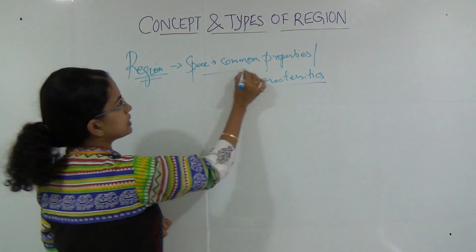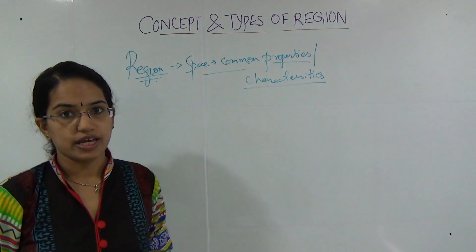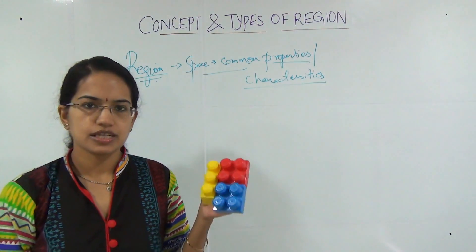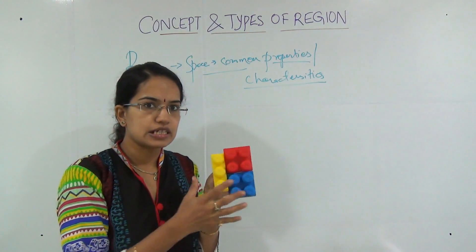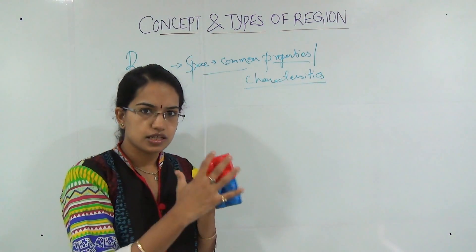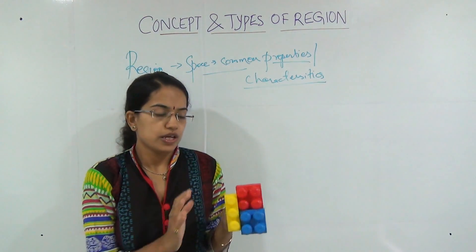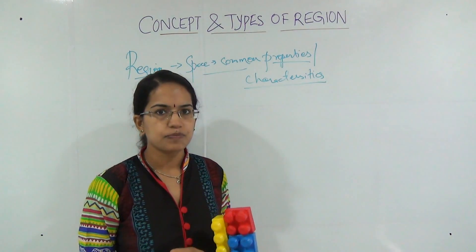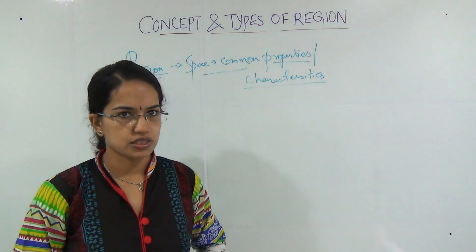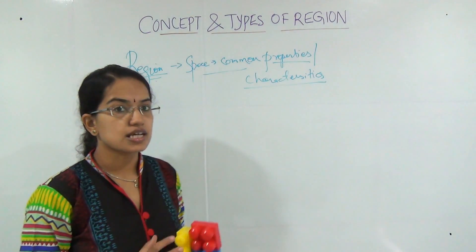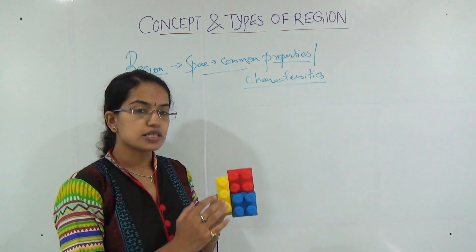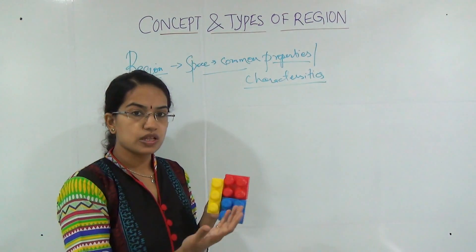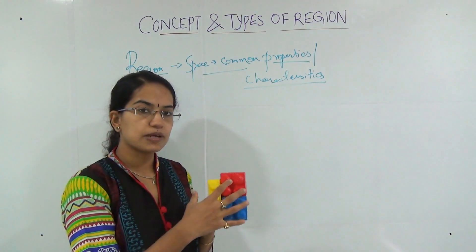Any area which has some common characteristics can be called a region. For example, if I am saying all these three are blocks, this is a region. Here is where we try to understand the difference between a formal region, a functional region, and a perceptual region. I would say this is a kind of perceptual region because I am perceiving that all three of these are blocks. Since all these three are blocks, this should be considered a region.